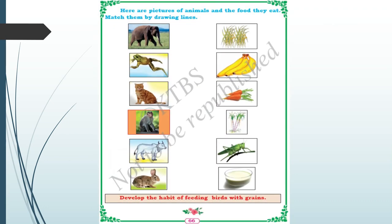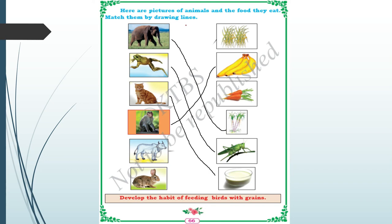Here are pictures of animals and the food they eat — match them by drawing lines. Elephant eats cane or bamboo. Frog eats grasshopper. Cat eats milk. Monkey eats banana. Cow eats grass. Rabbit eats carrot. Develop the habit of feeding birds with grains — just as old people feed birds in parks, you should also develop the habit of feeding birds and animals.